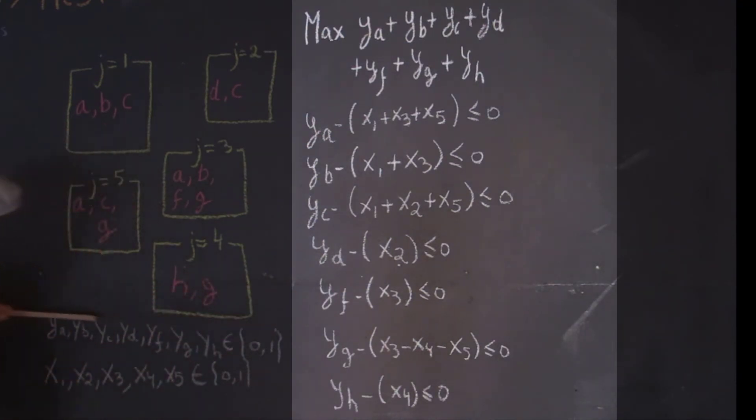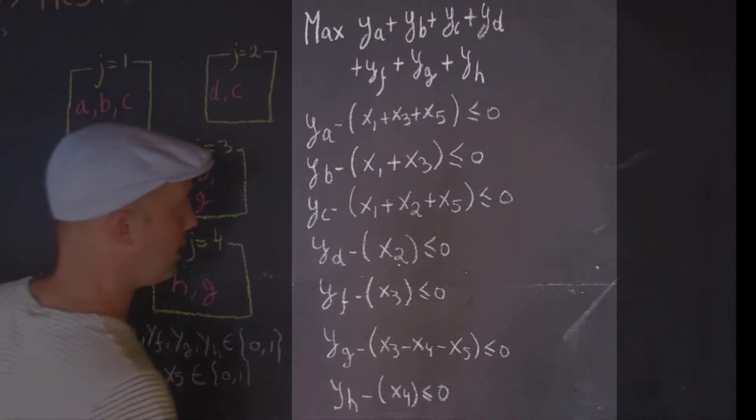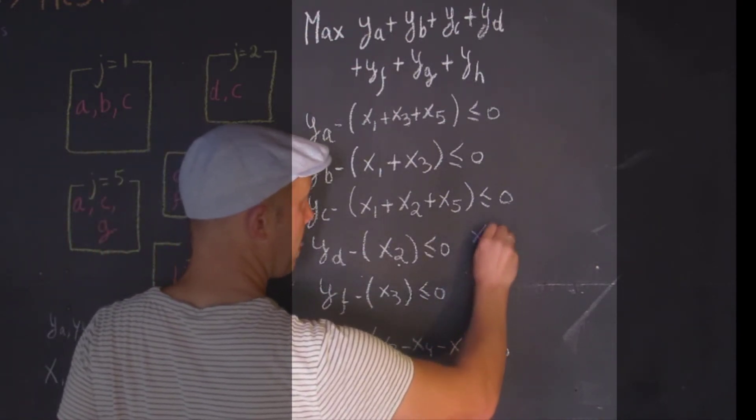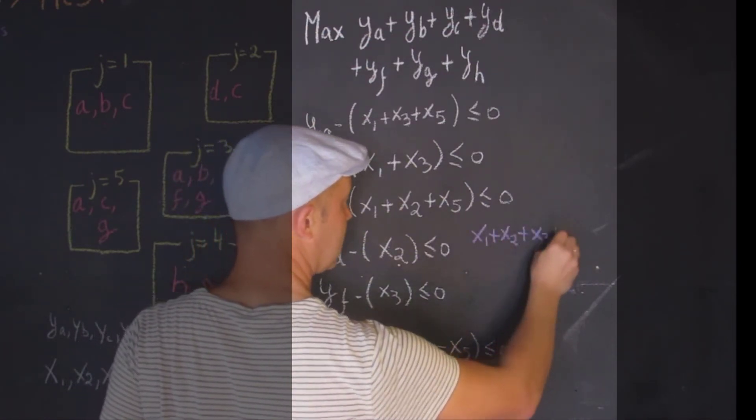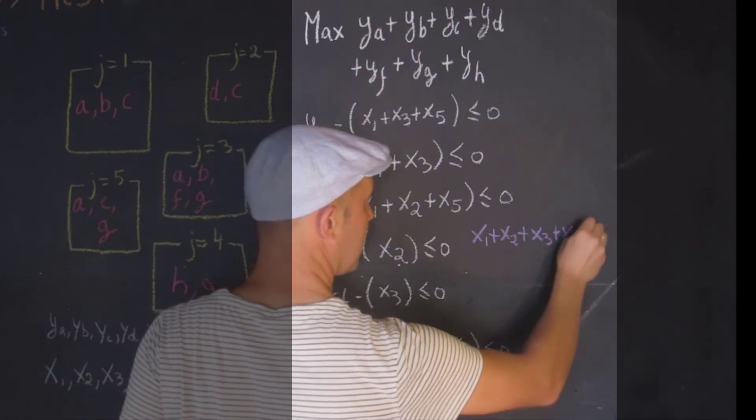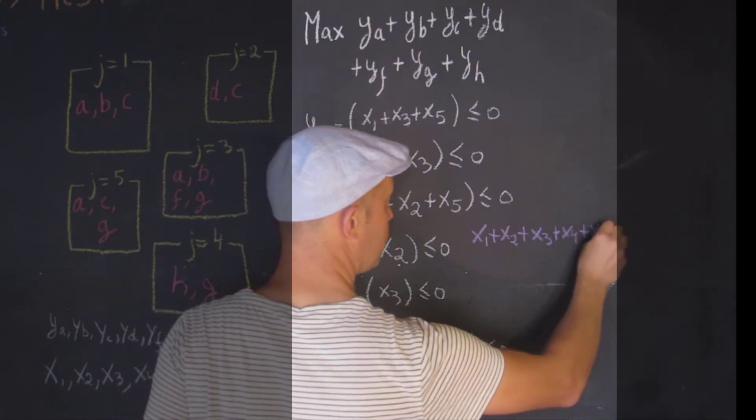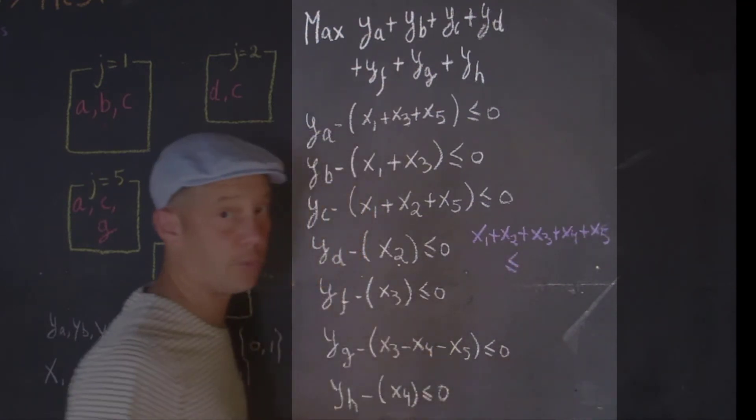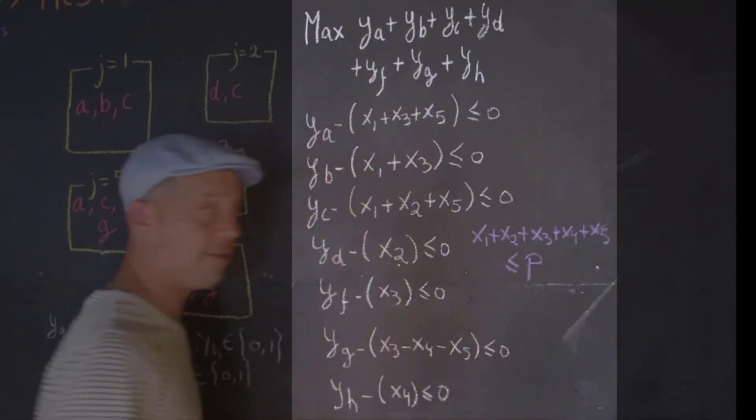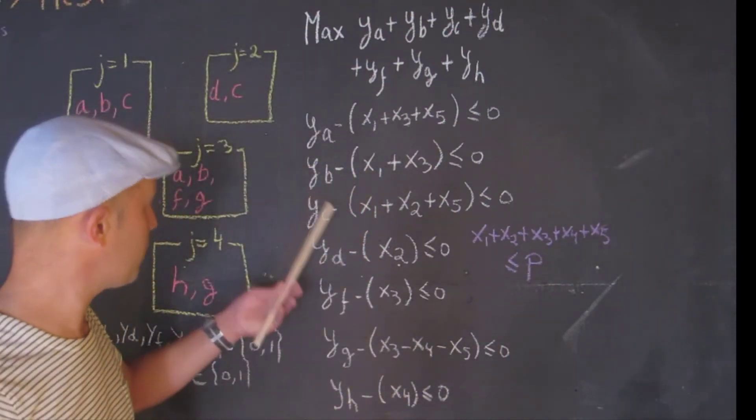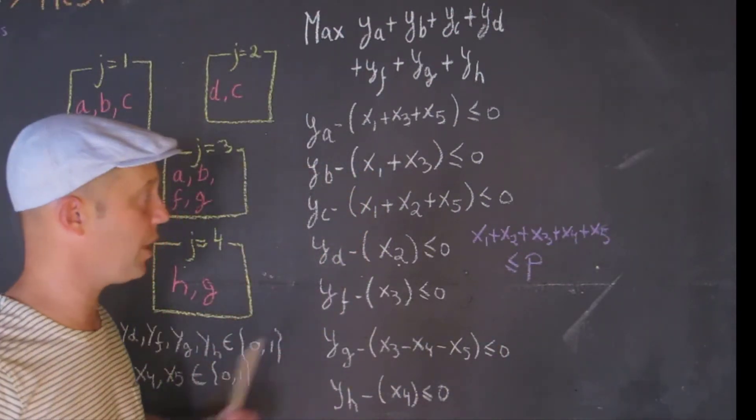Now at the end here, you have the integer constraints for the species and for the parcels. And then, of course, one thing that I forgot to add here, but of course we can play with this one, is that X1 plus X2 plus X3 plus X4 plus X5 should be less or equal, or equal, that's up to you what you want to choose, P. And then the question is, if we only have one facility, which one, oh, sorry, one parcel, which one it should be, if we have two and three and so on.